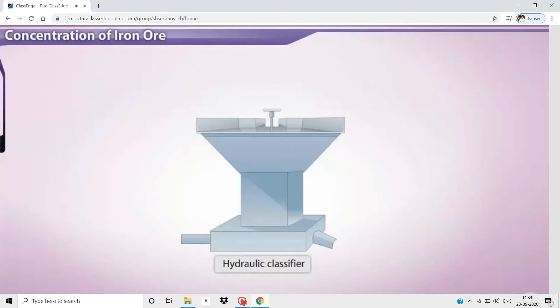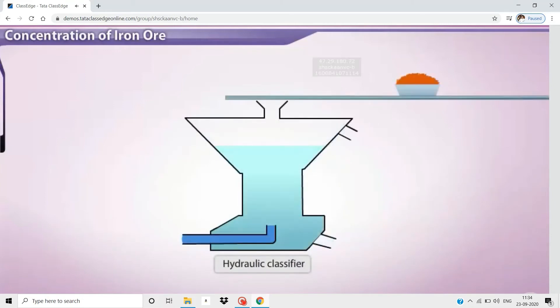First, powdered ore is added into the hydraulic classifier. Click the powdered ore to add it to the classifier.